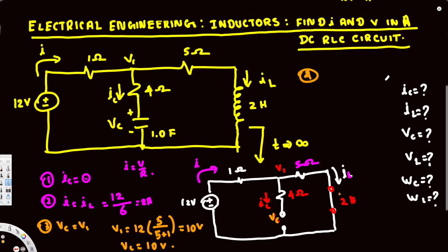Now let's see what happens to the voltage across the inductor. In steady state, the current through the inductor doesn't change, so there is no change in current, and therefore no voltage. VL is going to be zero.